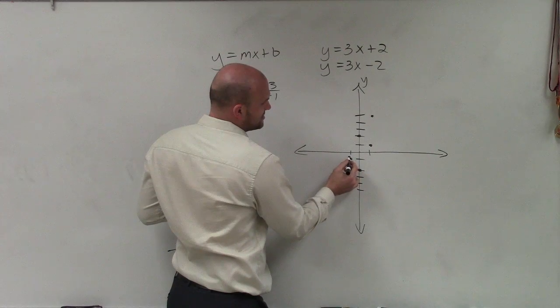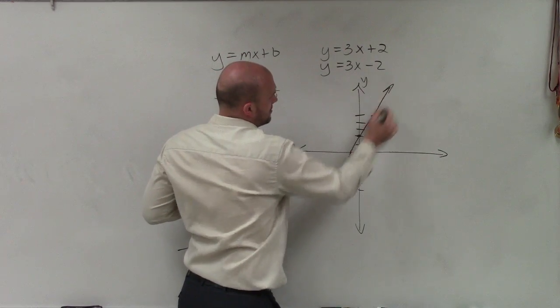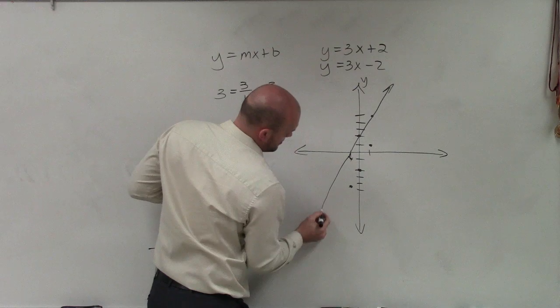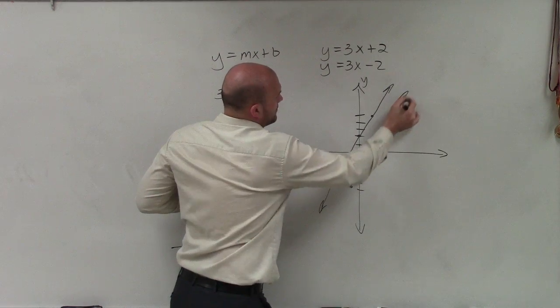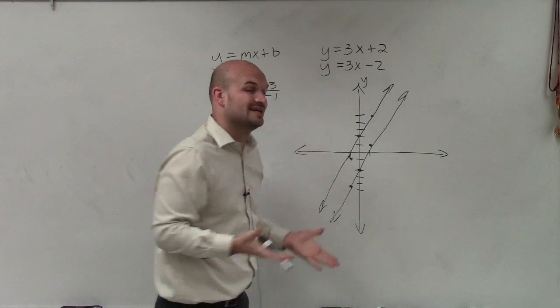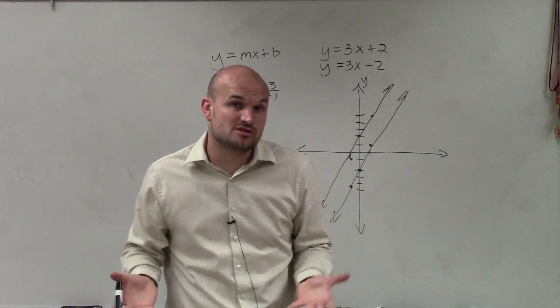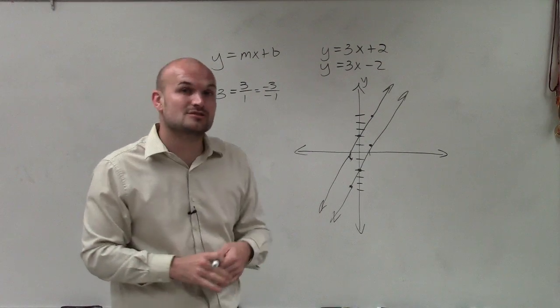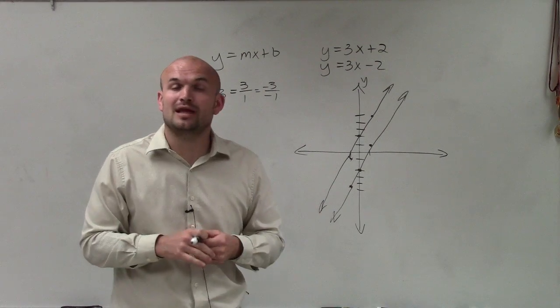And hopefully what you'll be able to see is that no matter which direction I go, these graphs are going to have the exact same slope, and they're never going to intersect. So therefore, there is no solution point. This would be an inconsistent solution based on we have parallel lines. Thanks.